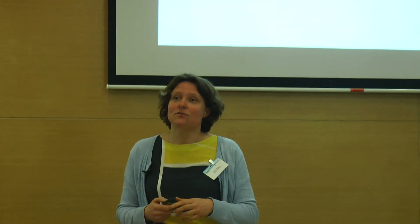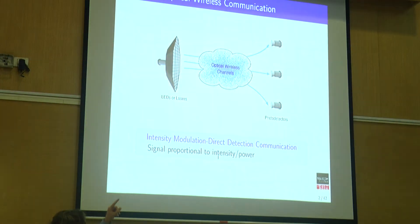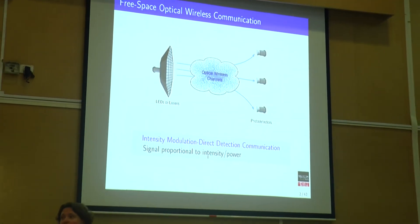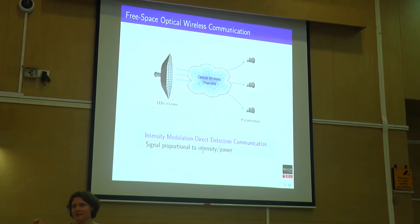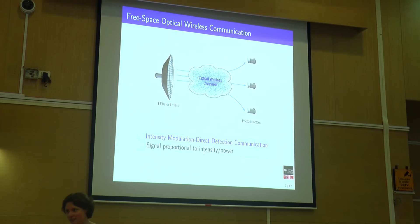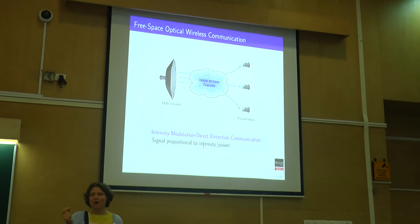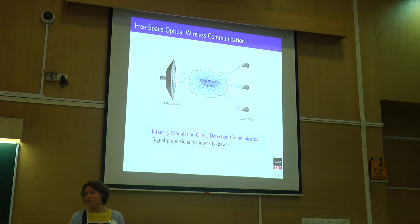So this is the communication model. You have LEDs at the transmitter side — typically LEDs, but it can also be lasers. The input signal, or the transmit signal, is modulated on the optical intensity of the LED. This is the first main difference to standard RF communication: here, because you modulate the intensity, the transmit power is proportional to the input signal, and not to its square as we're used to in wireless communication.